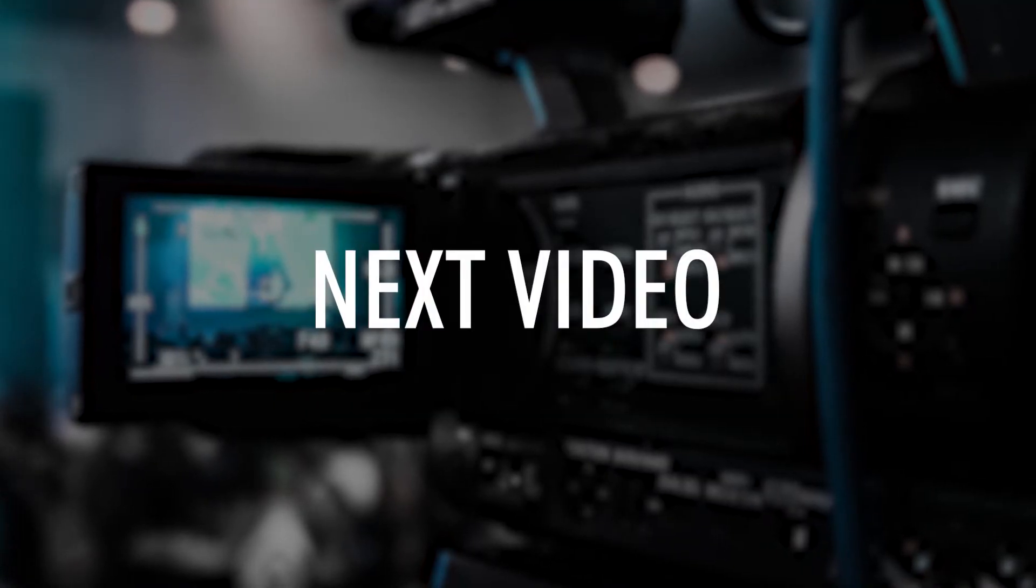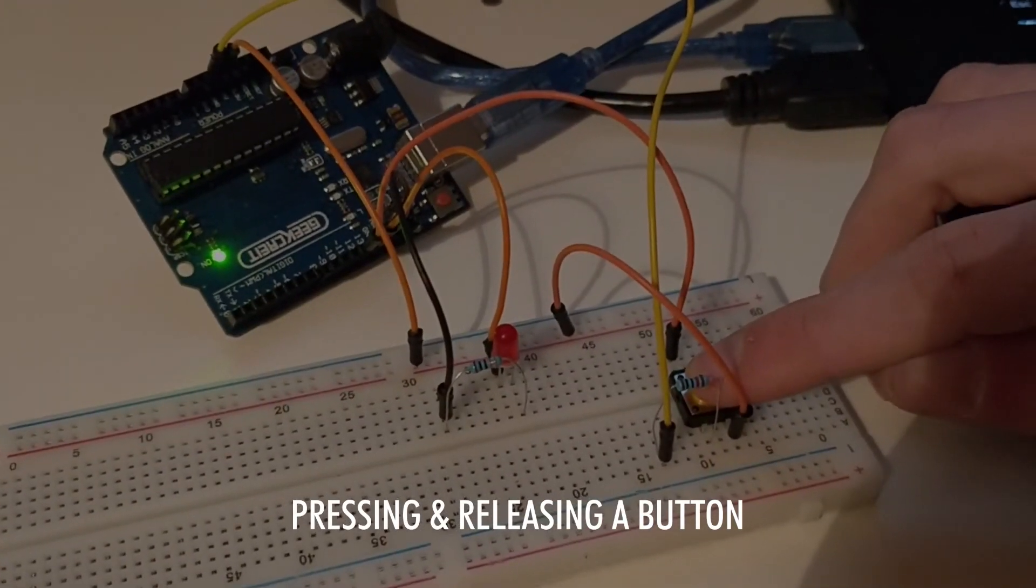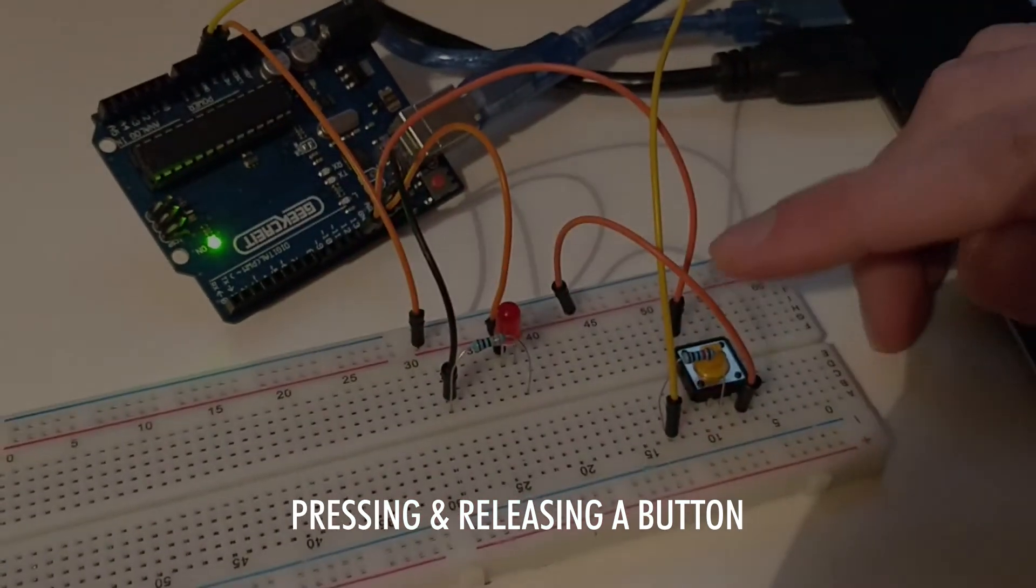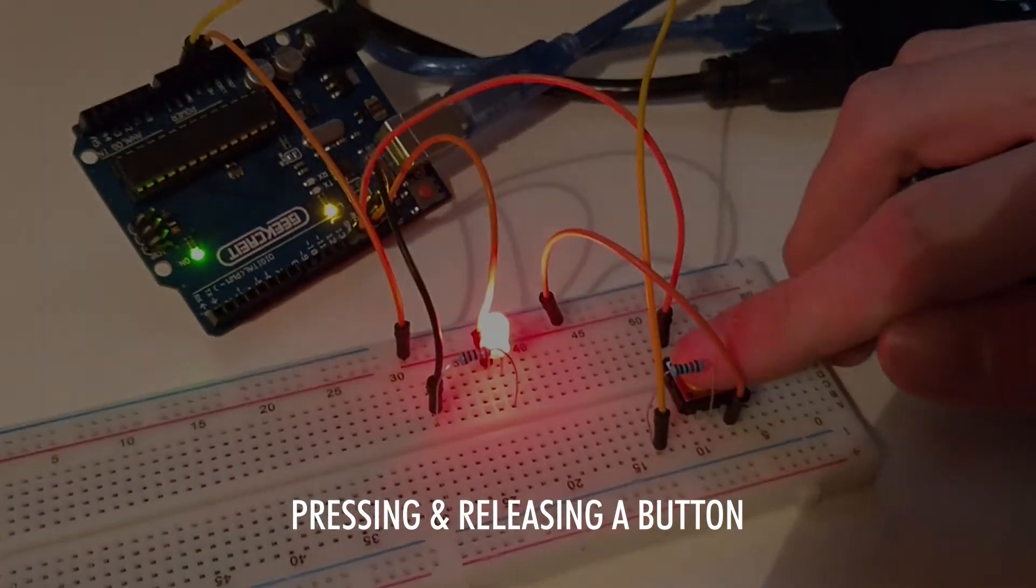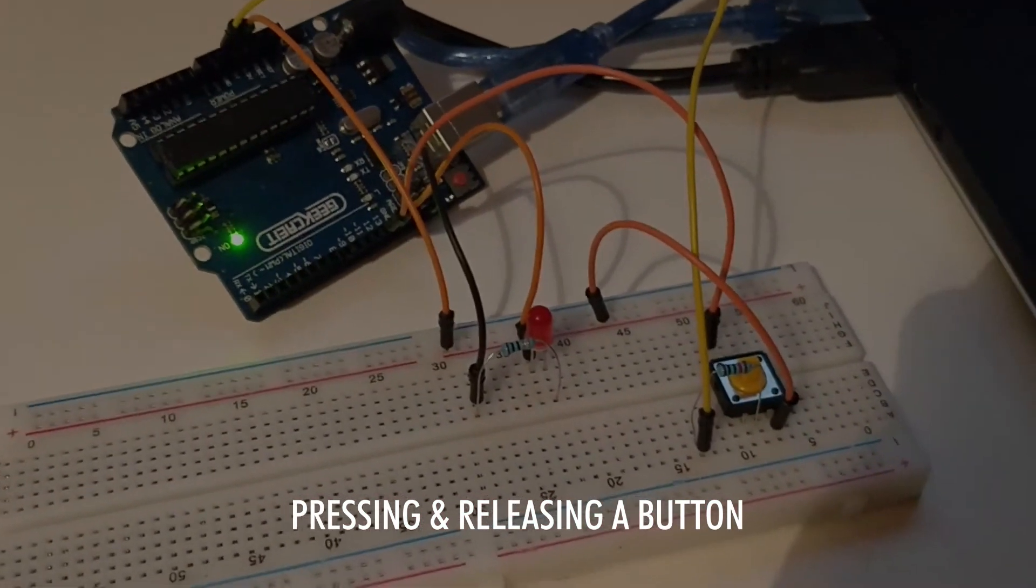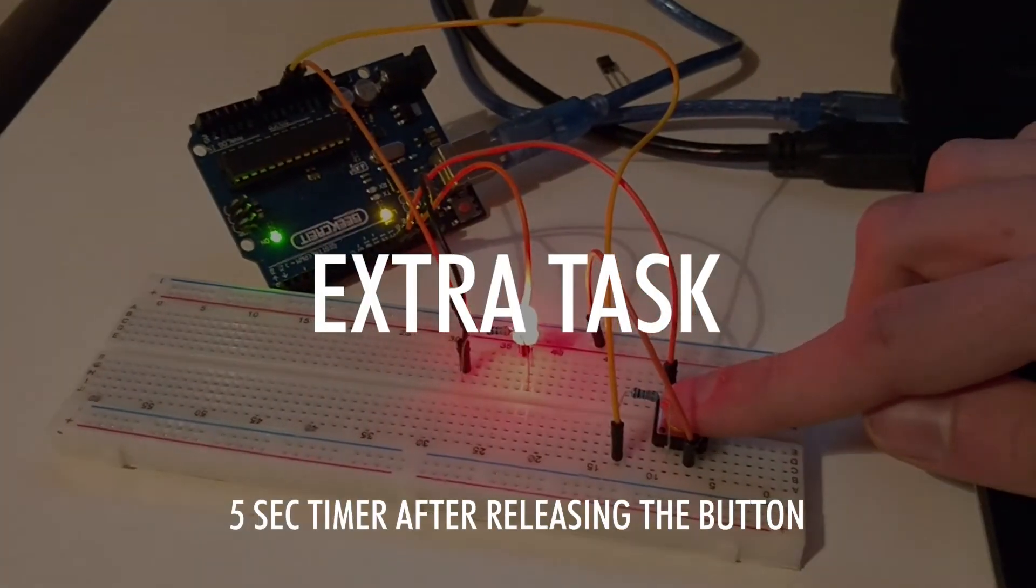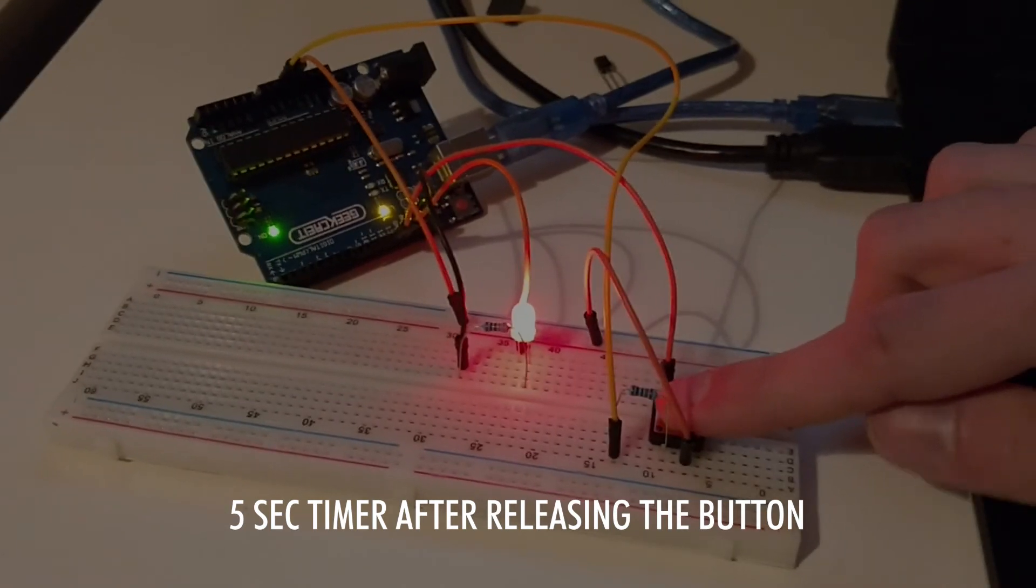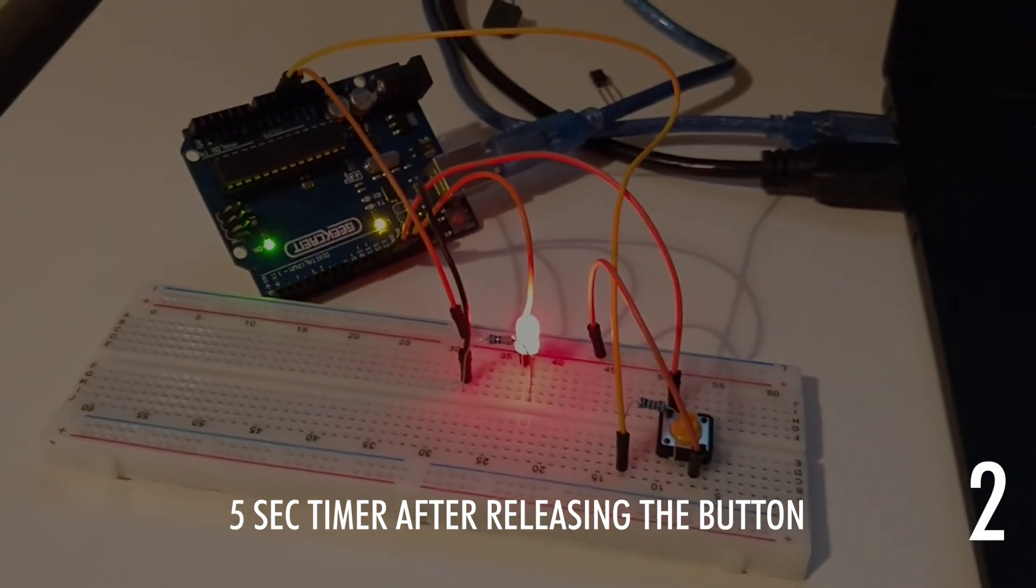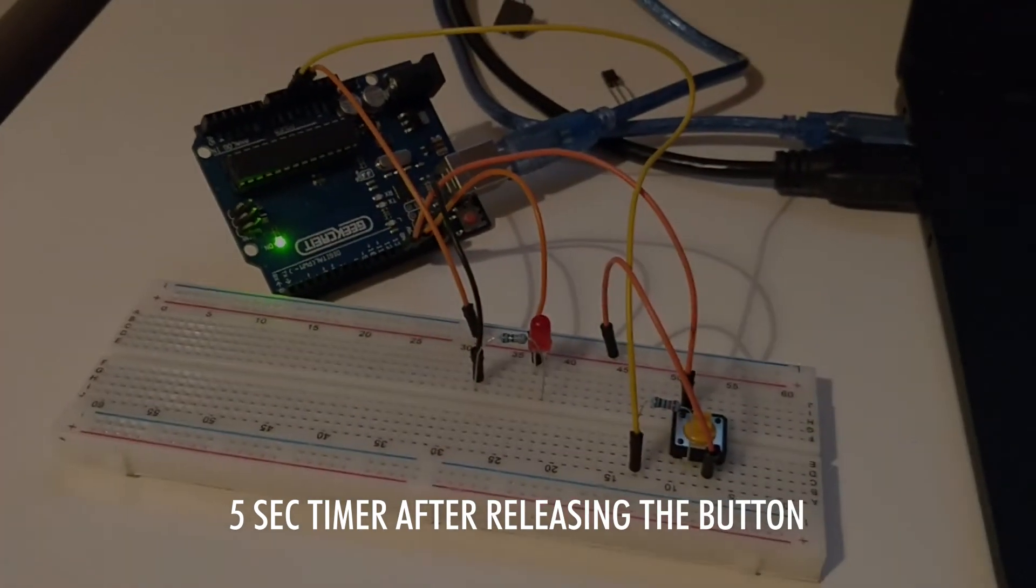In the next video we will see how to make an actual LED blink with the use of a button. You'll also see two different ways to do this. One with almost no code and one with a lot more code. Both of these have their own advantages and disadvantages. And after this you'll get an extra task to complete on your own. All of that will be in the next video. So watch till the end of this video and you'll be directed to the next video.